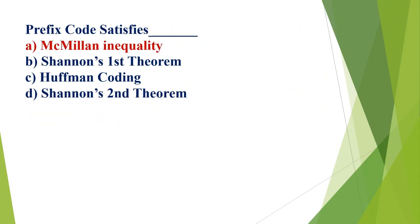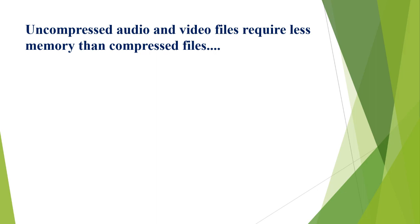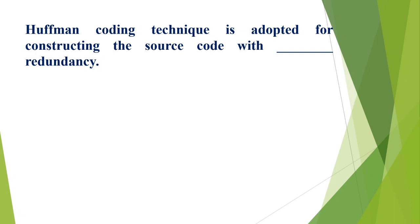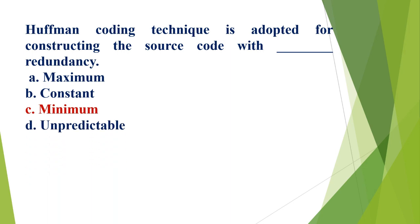Prefix code satisfies: A) McMillan inequality, B) Shannon's first theorem, C) Huffman coding, D) Shannon's second theorem. The correct option is A, McMillan inequality. Uncompressed audio and video files require less memory than compressed files: A) true, B) false. The correct option is B, false.